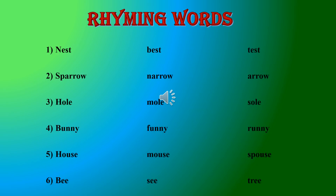Now for the exercise part, we are doing rhyming words in this chapter. You already know rhyming words — you've done them in class one also. The rhyming words are: nest, best, test; sparrow, narrow, arrow; hole, mole, soul; bunny, funny, runny; house, mouse, spouse; bee, see, tree. You are supposed to write these rhyming words in your notebook. Okay kids!